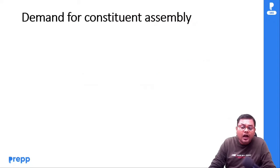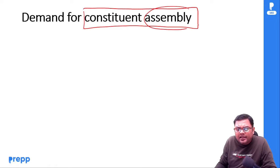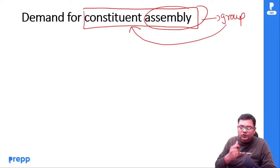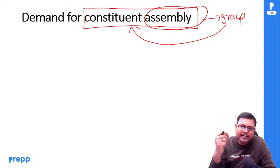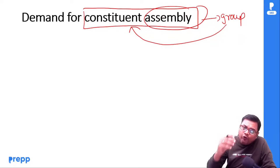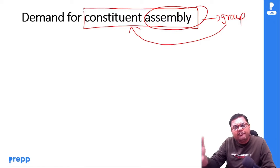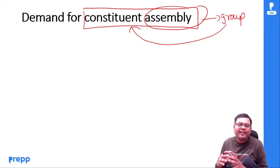अब हम आते हैं constituent assembly पे। Assembly का simple मतलब है group, और इस group का objective क्या होगा — to frame the constitution। Basically India के लिए constitution बनाना। इसका evolution भी पता होना चाहिए कि किस तरह से demand की गई और क्या different events हुए। यह चीजें काफी factual हैं, इनको याद करना पड़ेगा — there is no other alternative। काफी questions पूछे जाते हैं in prelims examination।